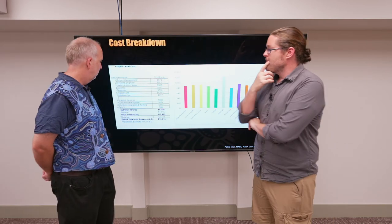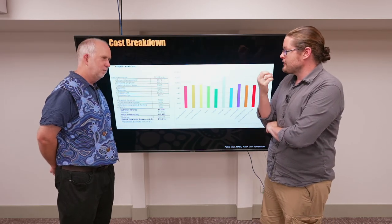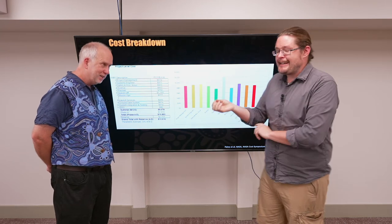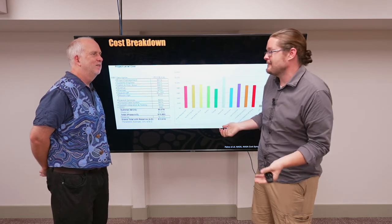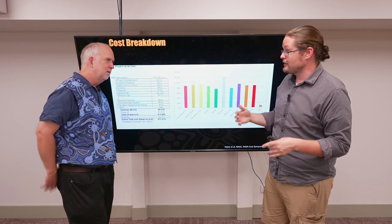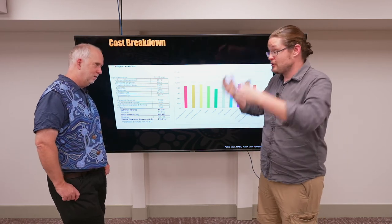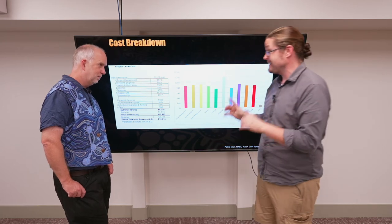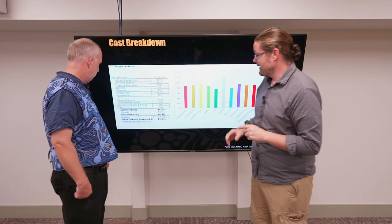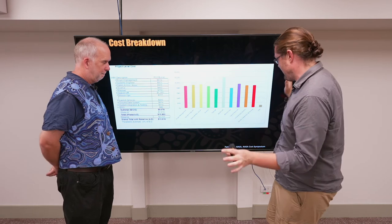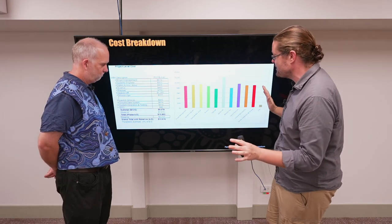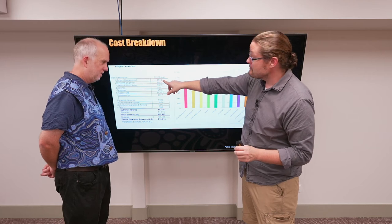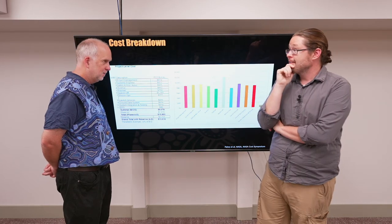Now the other thing that we start to figure out is, where does this actual money go? And like everything, it goes to people. Yeah, I think we think that space is expensive, and it is, but it's expensive because there's a lot of highly trained research engineers, scientists, technicians that go into these things to make it work. And so this is just a breakdown of one budget and a costing model, lots of things that we do. And you can see the different categories. Project management.